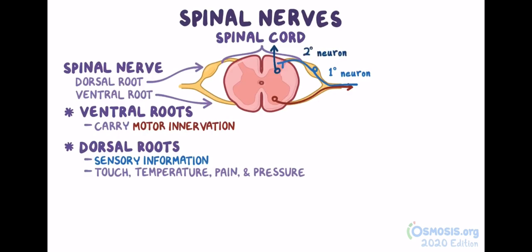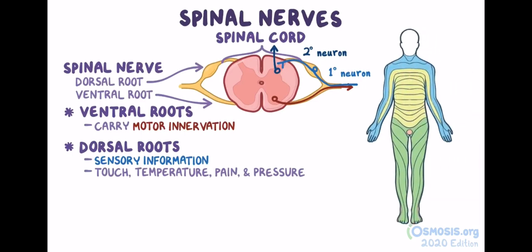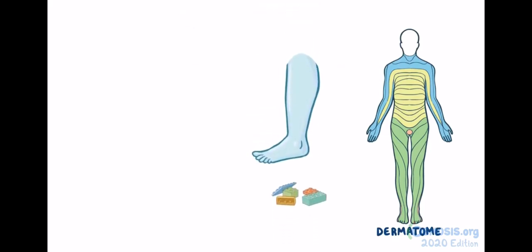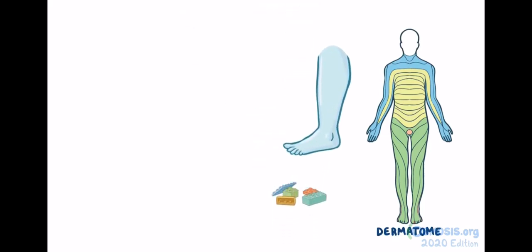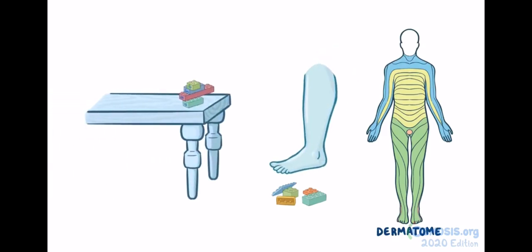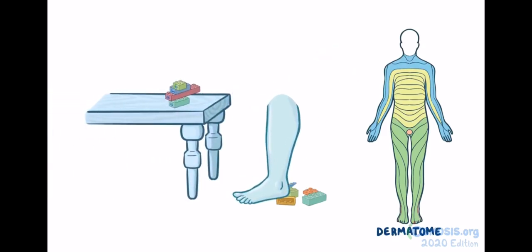Each spinal nerve is in charge of the sensation of a specific area of the skin, called a dermatome. For example, if you step on a Lego, the pain would be carried by the S1 nerve, but if you hit your big toe on a table leg, the pain would be carried by the L5 nerve.